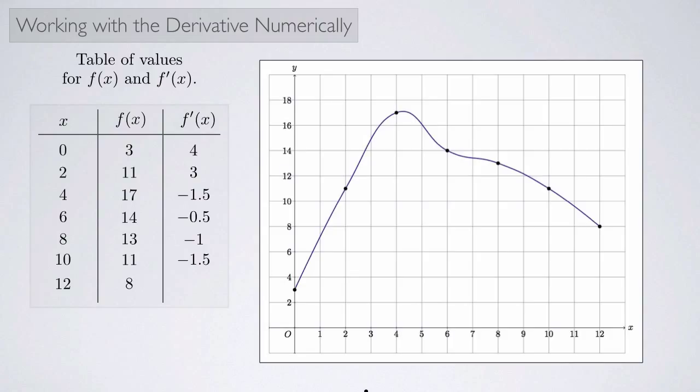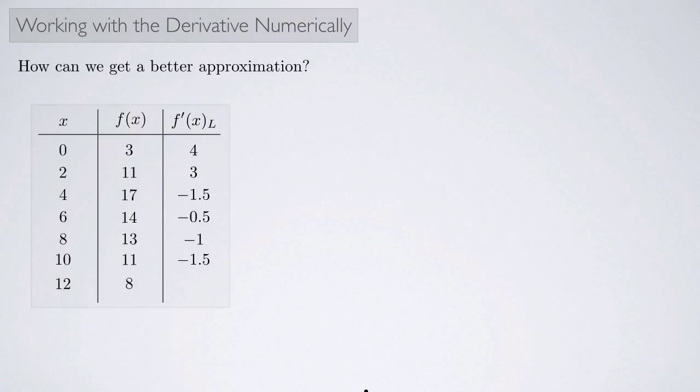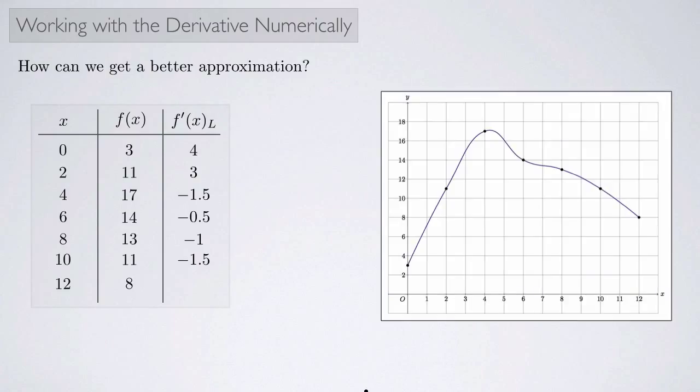Here's our table of values again, and notice for f'(x) I put a little subscript L, and that's because we are using the left endpoints. Remember how we didn't have a value down here for f'(12)? That's because we were looking at endpoints from the left. In other words, to calculate the value of f' at 0, I took this point and this point and used those two values to calculate the slope.